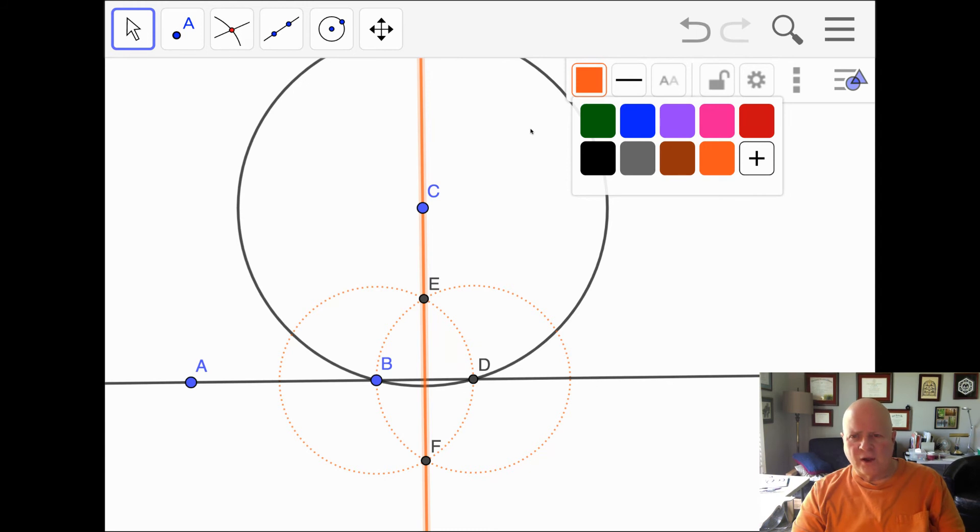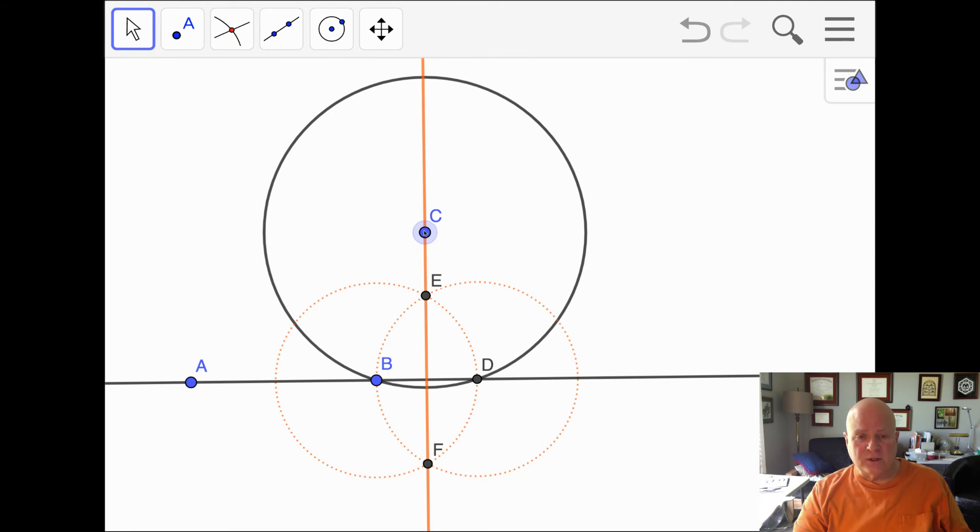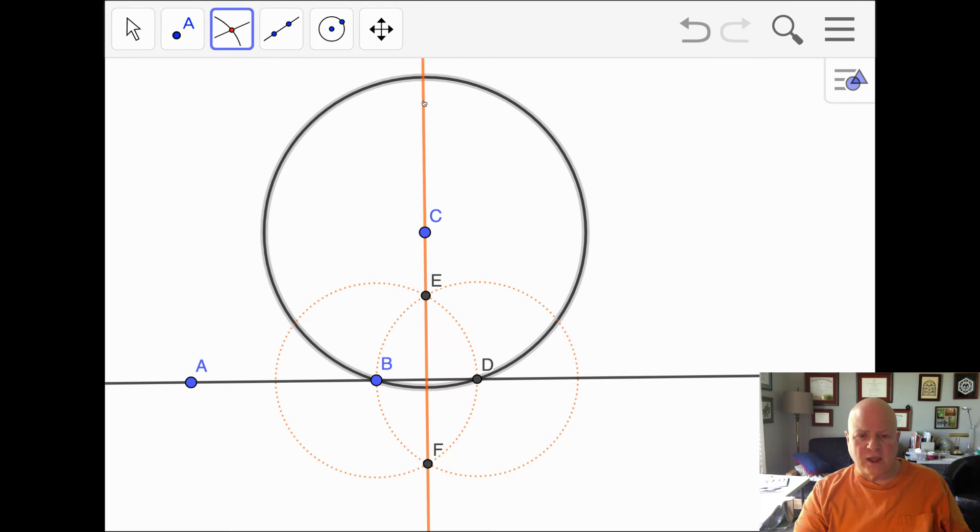And now we need to construct a second line that goes through C that is going to be parallel to the existing line. That means it's going to be perpendicular to the orange line EF. And to do that, I need two points. I need to construct a perpendicular bisector through C. I need two points that are the same distance from C as this line is. So I'm going to construct the intersection of the circle and my orange line EF, and I get points G and H.